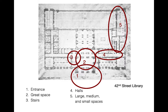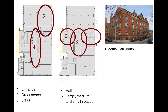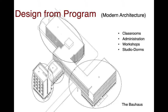Here's the 42nd Street Library: Entrance, Grand Great Space, Grand Stair, Gallery, Circulation, Large, Medium, and Small Spaces. I usually show this one without the photo because that's exactly the organization of Eagle South.